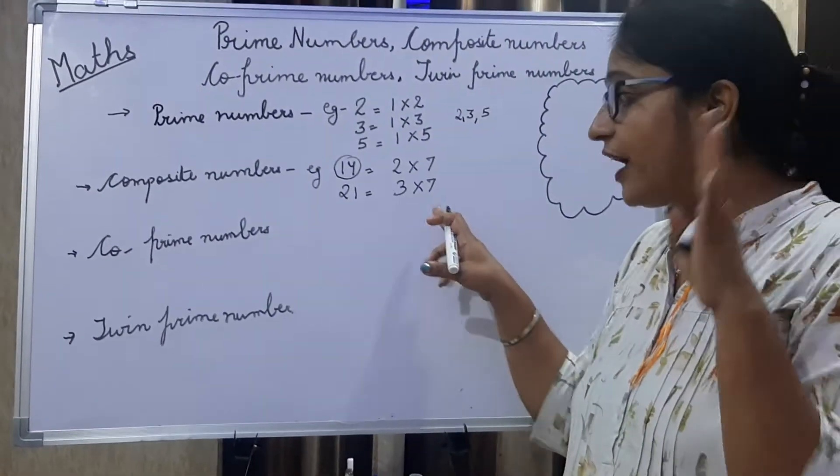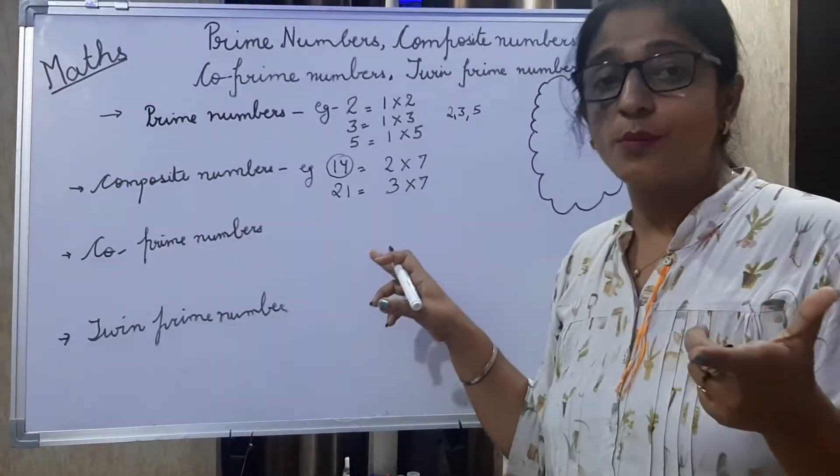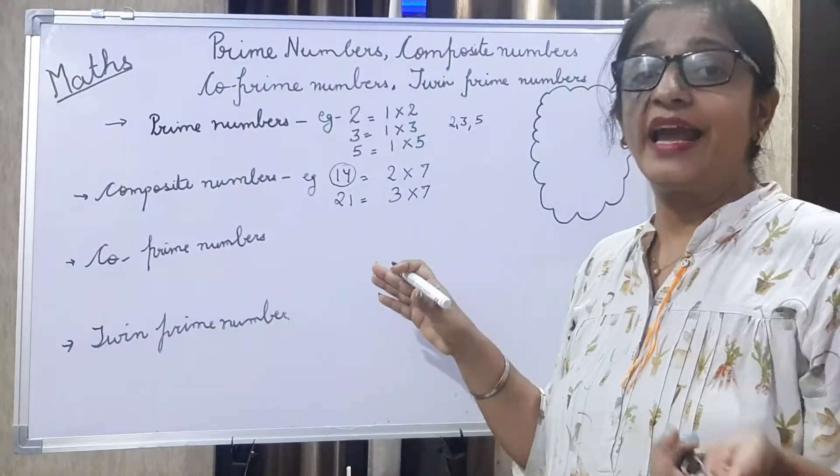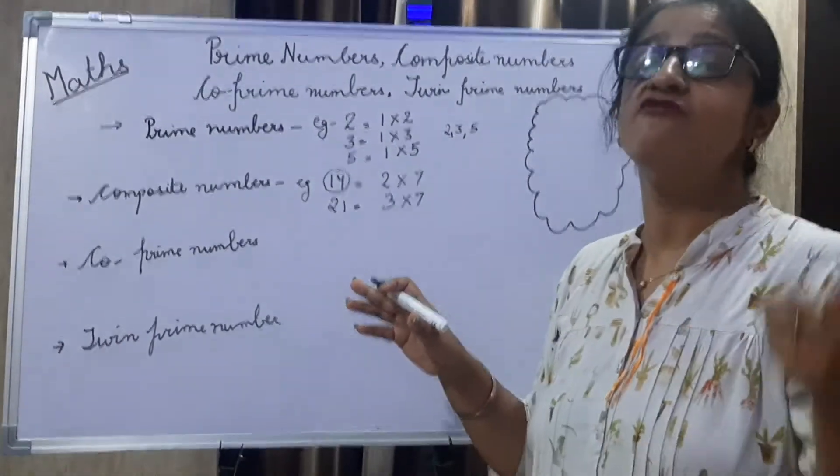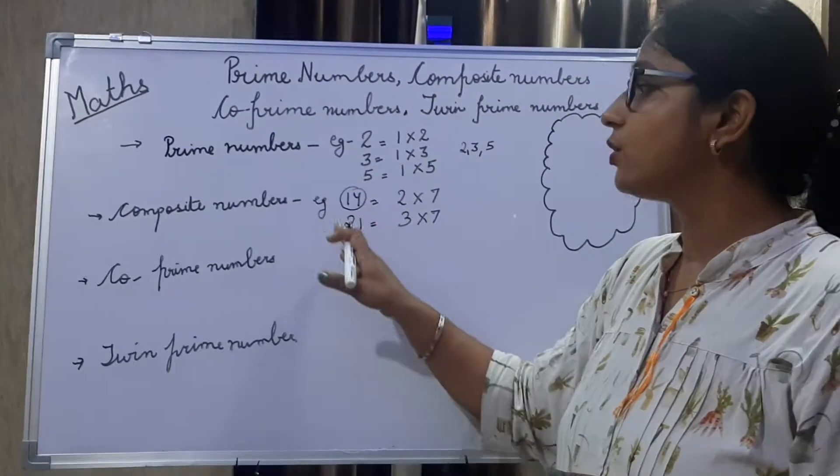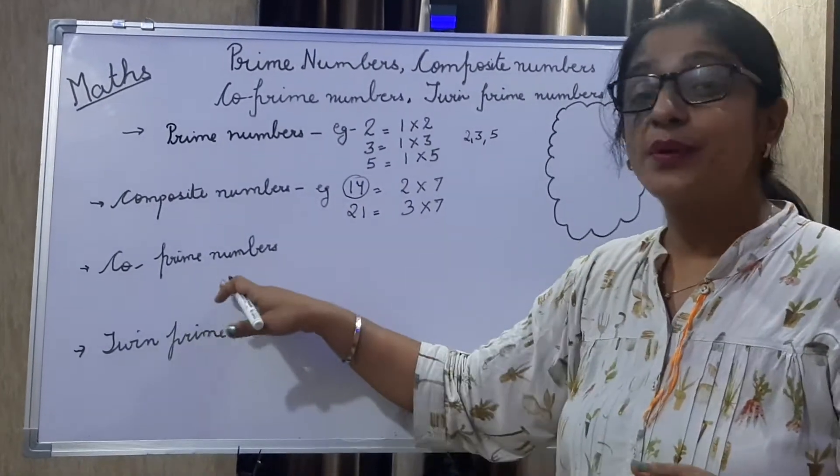This means these numbers, those numbers are composite numbers, which are divisible by the number itself and one and have more factors other than one and itself. These are composite numbers.